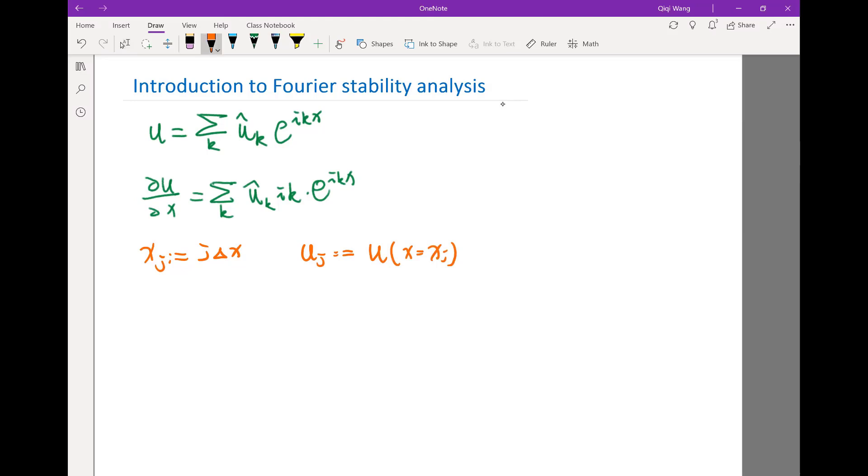Now what is my uj plus 1 minus uj minus 1 divided by 2 delta x? What is the second order difference scheme due to the Fourier series? So let's try to work it out. We are just plugging in the definition.